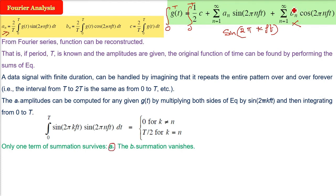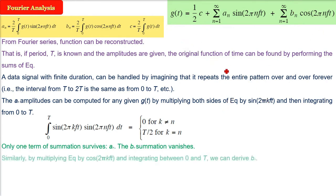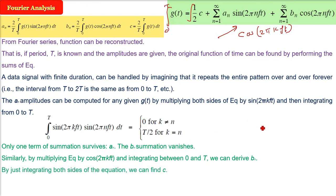Similarly, b_n. Same thing will happen. Now multiply the whole expression, because earlier we multiplied with sin(2πkft). Now we will multiply the whole by cos(2πkft). Same thing. Again we will integrate it from 0 to T. And now we will get b_n. Because all the term containing a_n will be cancelled, will be 0.